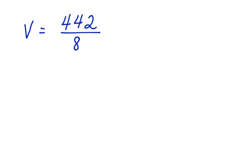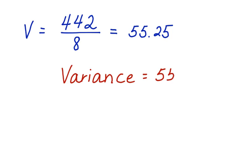which is V. We divide 442 by 8 and we get 55.25. So the variance of our data set is equal to 55.25.